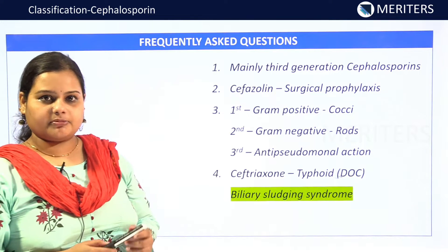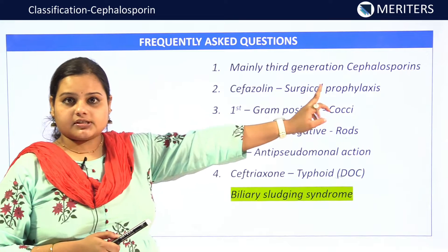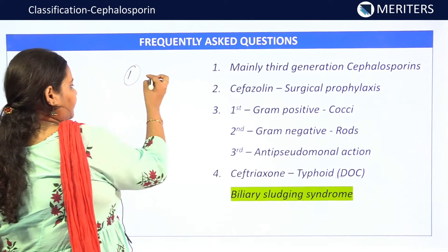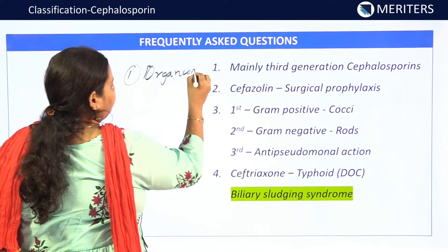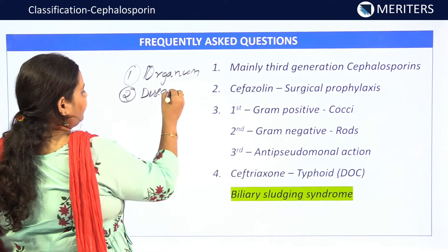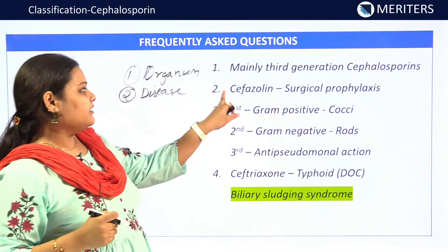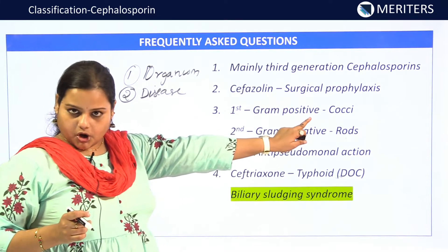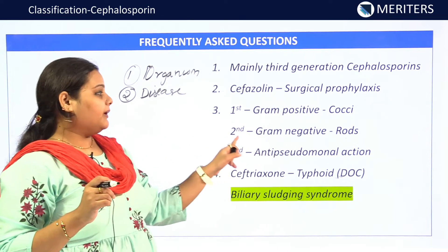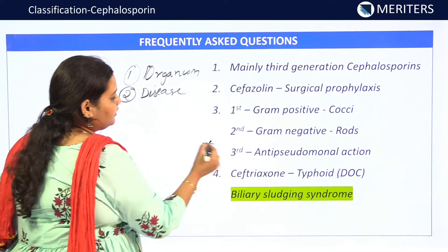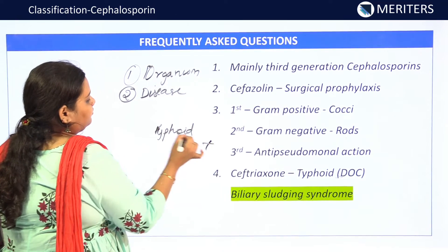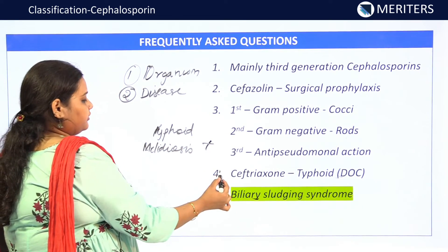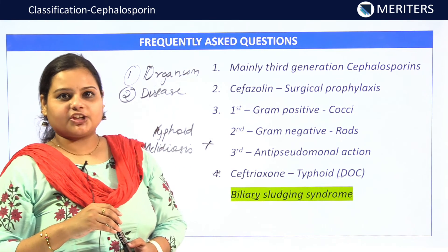For frequently asked exam questions: third generation cephalosporins are a major focus due to their broad antibacterial spectrum. Cefazolin is for surgical prophylaxis. First generation is for gram-positive cocci, second generation for gram-negative rods, and third generation has anti-pseudomonal action — also remember typhoid, melioidosis, and biliary sludging syndrome caused by ceftriaxone. I hope this video was helpful — thank you for watching, happy learning!